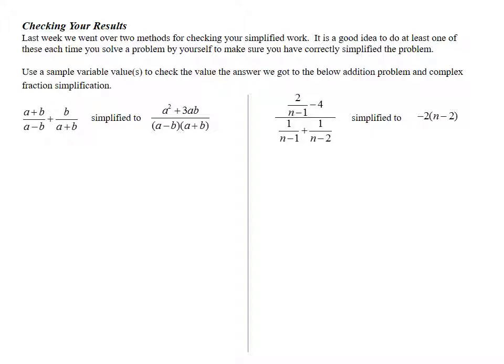In this first example, we have two variables, a and b. So I'm going to choose a value for both a and b. I'm going to choose, say, a is 7 and b is 3. Again, it's important not to choose 0, 1, or sometimes 2 will give you some weird things. So what we want to do is plug 7 for a and 3 for b into the original statement we had and the simplified statement and see if they come out to be the same.